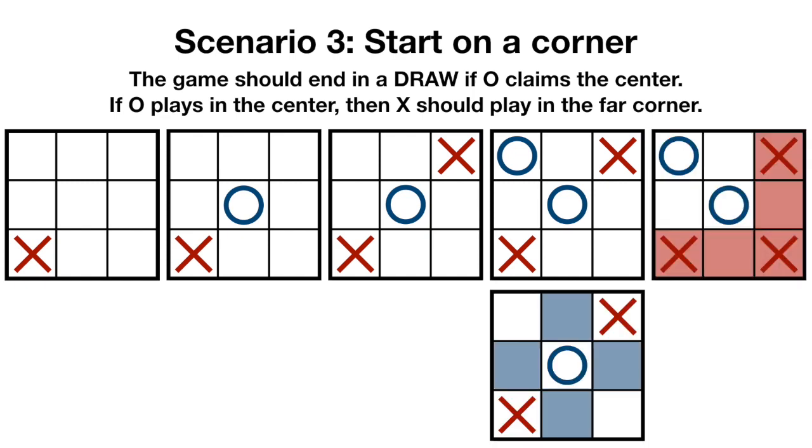However, if O claims one of the edges, then the game will end in a draw, because both players will spend their turns blocking each other.